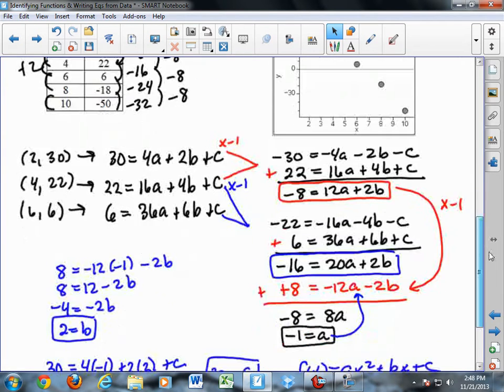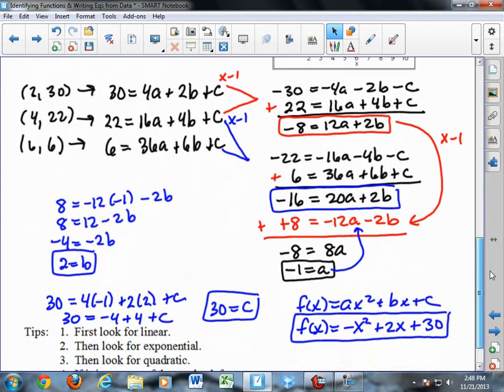To solve this system of equations, I select the first two equations and multiply the first one by negative 1 so that I have opposite values for c. And then when I add the two equations together, the c's drop out and I get negative 8 equals 12a plus 2b. Now, I want to create another equation with a and b in it so I can get rid of the b. So I pick a different pair of equations. So I picked number 2 and 3, multiplying the equation number 2 by negative 1.